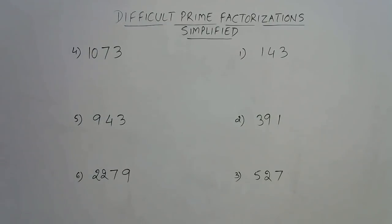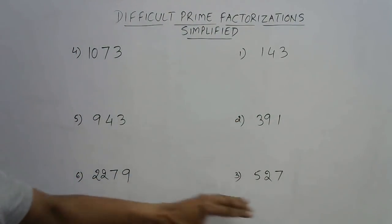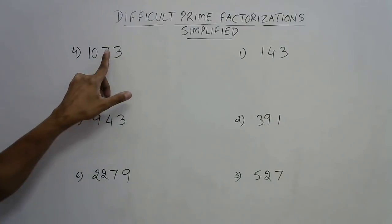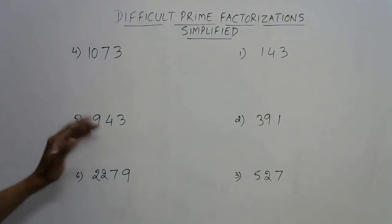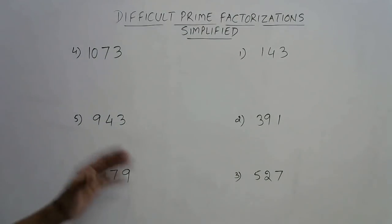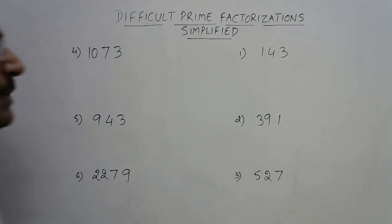Students can make prime factors of such numbers easily if they have a basic understanding of prime numbers and their products. All these numbers I have written here are products of two primes, and we need to find out which two prime numbers have to be multiplied to get 1073, 943, 2279 — such large numbers. Most students cannot factorize these within 15 to 20 seconds.